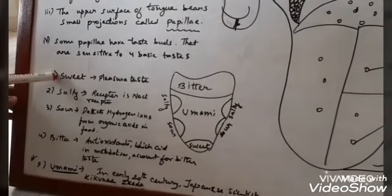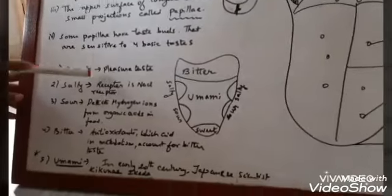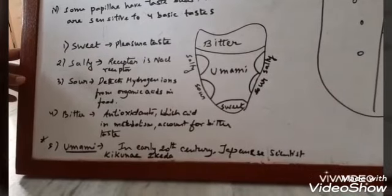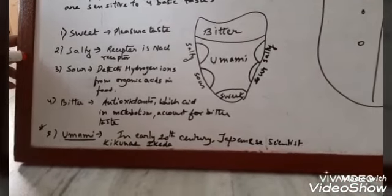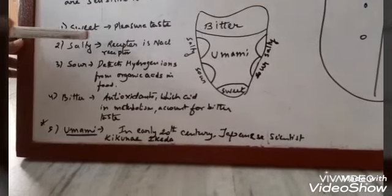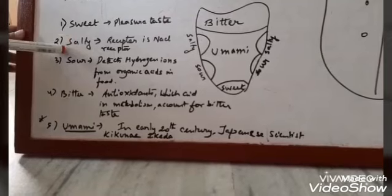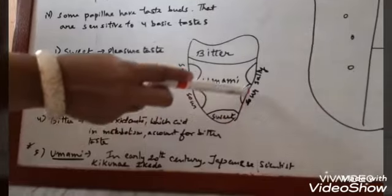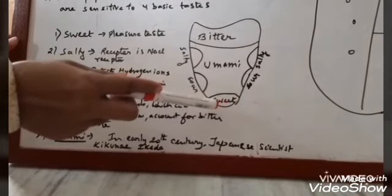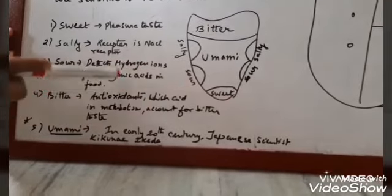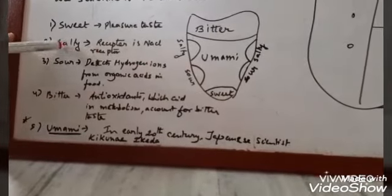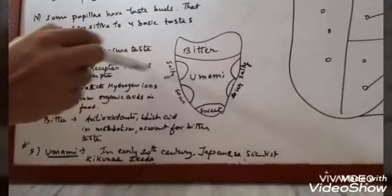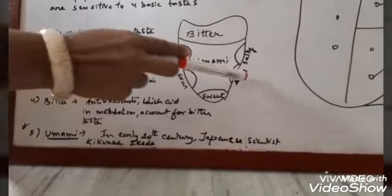The first taste is sweet taste, also known as the pleasure taste. We generally find it in carbohydrate food — when we chew carbohydrate food we get sweet taste. Next is salty taste. As I have drawn here, the sweet taste receptors are located at the front of the tongue. Salty taste receptors are also marked here — these receptors are generally sodium chloride receptors.